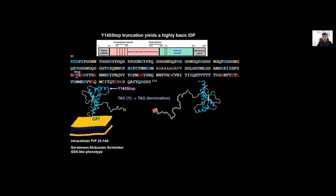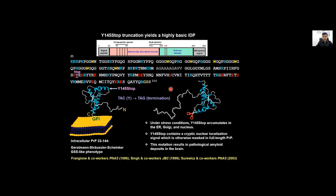I have extended the intrinsic disorder down to the N-terminal starting point which is the 23rd residue. This is analogous to a cleavage—you are stopping this and it is an intrinsic disorder domain. Under stress conditions this particular fragment accumulates in the ER, Golgi and nucleus. It is of interest to note that Y145 stop contains a cryptic nuclear localization signal which was often masked in the full length prion protein. So it can go to the nucleus as has been shown previously. This can also result in pathological amyloid deposits in the brain giving rise to a unique GSS phenotype.